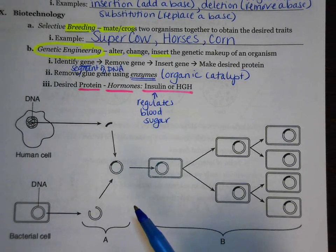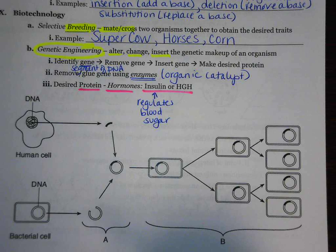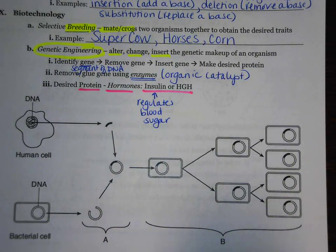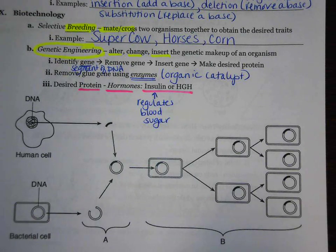We used to not be able to give people these proteins. We used to have to get insulin from a cow or a pig. Now we can safely make it in the lab using E. coli, a type of bacteria.